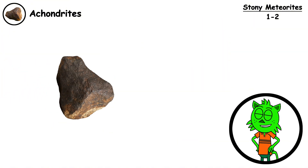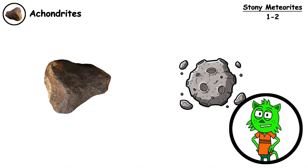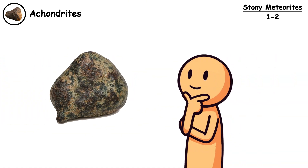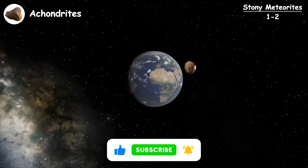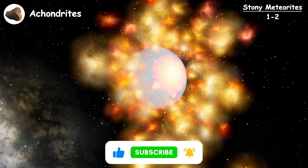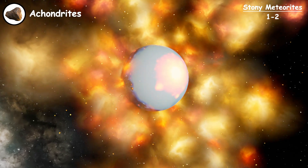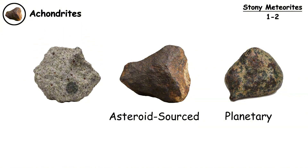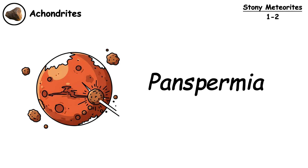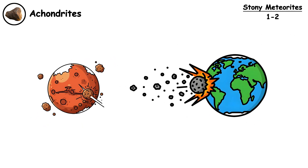Asteroid source types formed within a space body that, instead of becoming a planet, remained frozen as an asteroid. Planetary achondrites are even more exotic — they are pieces of planets or moons blasted into space by asteroid impacts, eventually falling to Earth. These rocks show that material can transfer between worlds, supporting the panspermia hypothesis: the idea that life itself might spread through space via meteorite impact.